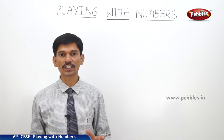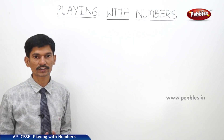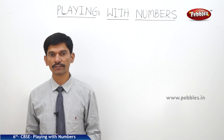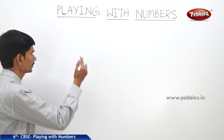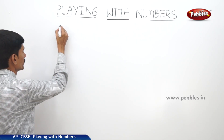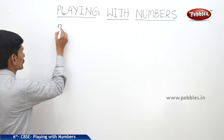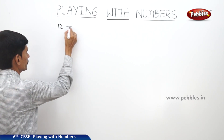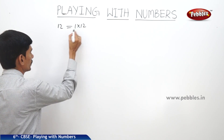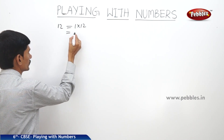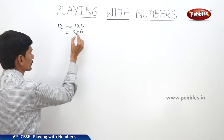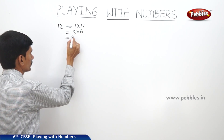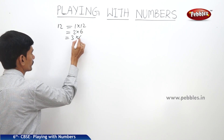Now there are some properties regarding the factors and multiples of a given number. For example, if you write the factors of 12, we write 1 into 12, 2 into 6, and 3 into 4.